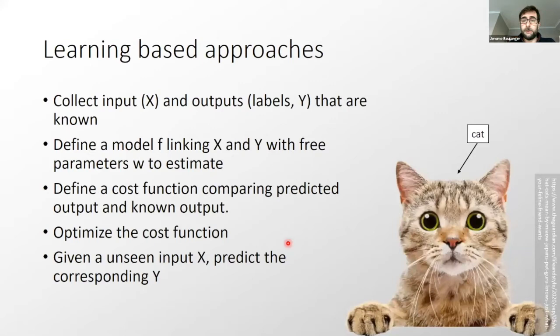You have also learning based approaches where you would have some input and known labels that are known. You have a pair of x and y. The input could be some images, the label for example here we have an image of a cat. The output will be a label that it is a cat that internally will be represented as a number. We define a model which links x and y with free parameters to estimate. In a simpler case the model could be a linear regression. You would have the slope and the offset of this linear regression to estimate. Then you define a cost function to compare the predicted output f of x on the y that you know. You optimize this cost function. In the case of a slope you could do a least square. Then given an unseen input you will want to predict the corresponding label the y. This is machine learning approach in general.